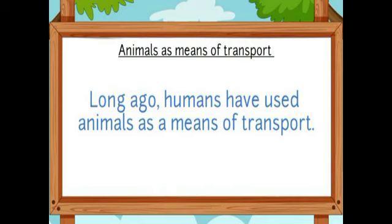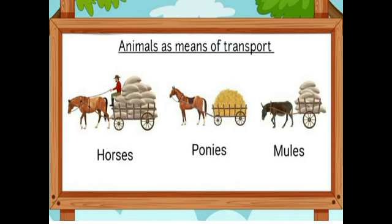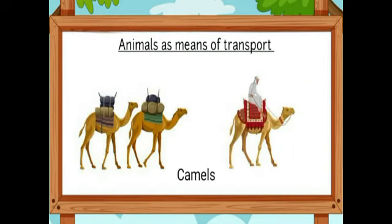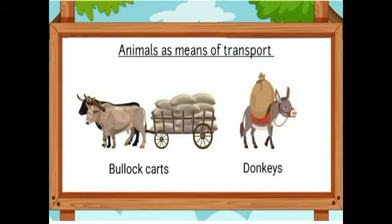Now, animals as means of transport. In the olden days, kings used to travel on elephants. Elephants are also used in thick forests to carry heavy logs. In hilly areas, horses, ponies, and mules are used to carry goods and people. In deserts, camels are used to carry heavy loads and people from one place to another. They move very fast in the desert, that's why the camel is called the ship of the desert. In our villages, bullock carts and donkeys are used to carry heavy loads, as they are very strong animals.